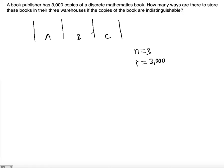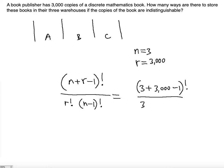The answer that is being called for here is using the formula: n plus r minus 1 factorial divided by r factorial multiplied by n minus 1 factorial. Plugging what we know, we're gonna get 3 plus 3,000 minus 1 factorial divided by 3,000 factorial over 3 minus 1 factorial.